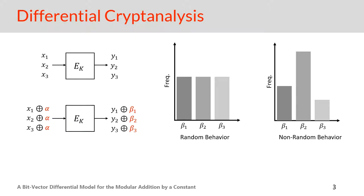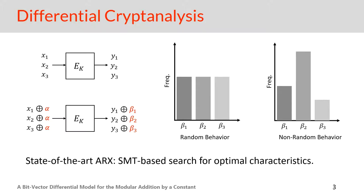Differential cryptanalysis exploits the differentials where the pair alpha and beta propagate with high probability. To show ARX security against differential cryptanalysis, one may try to do the standard search for differentials with the highest probability and see whether the probability is low enough. But since the search is most of the time tough and impractical, people normally tend to find the longest and most probable differential trails by making some assumptions. Nowadays the current state of the art is automated tools such as SMT solvers, which work on bit-vector theory.